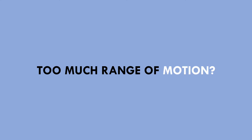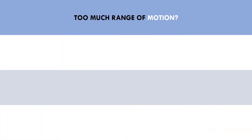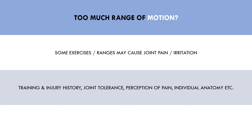However, is there ever a time where more range of motion is worse? The answer is yes. Some trainees may find that exercises which use specific ranges of motion seem to irritate certain joints and cause pain over time. This is highly individual for each trainee and may be influenced by predispositions. Factors such as training history, injury history, joint tolerance, perception of pain, and individual anatomy will all influence which exercises feel more or less comfortable on a trainee's joints.